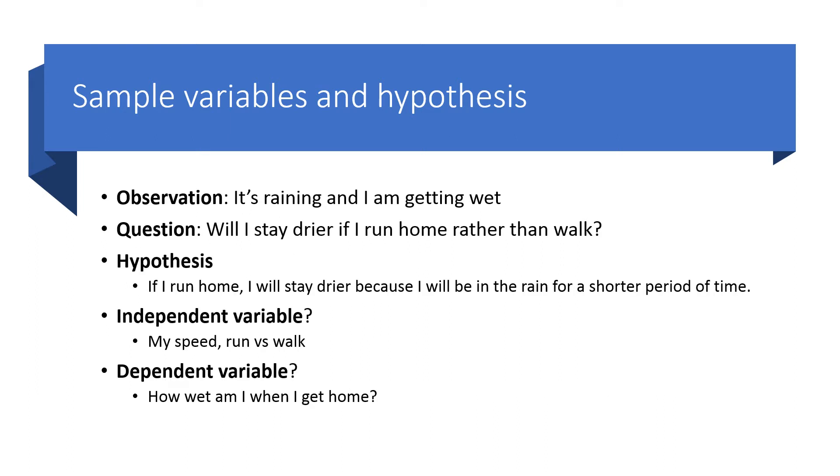Here's the sample hypothesis that I made. I said, if I run home, then I will stay drier because I will be in the rain for a shorter period of time. From that, you can take the if section of that statement, and that becomes your independent variable. The if would be the independent variable would be my speed. Am I running or am I walking? And the dependent variable would be just how wet I actually am when I get home.